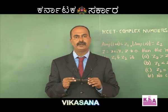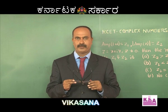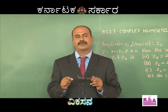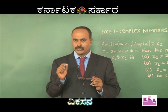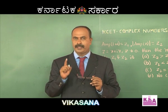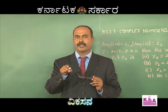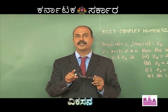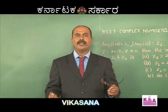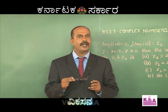Dear students, mod z is root of x squared plus y squared. Argument of z is tan inverse of y by x. Root of x squared plus y squared is always a real number. x is real, y is real — even though y is called the imaginary part, y is real. So root of x squared plus y squared is a real number. Argument of z, or amplitude of z, is tan inverse of y by x — that is also a real number.